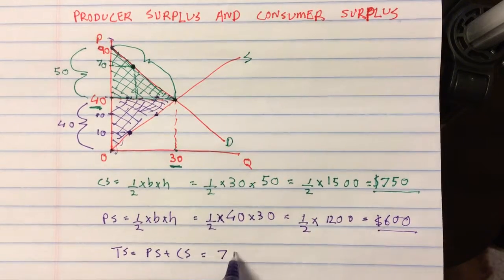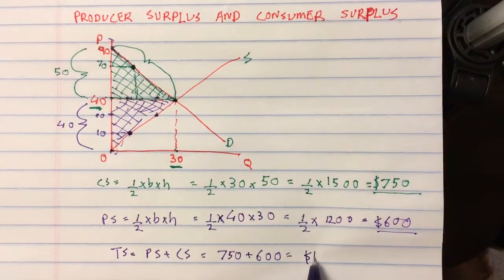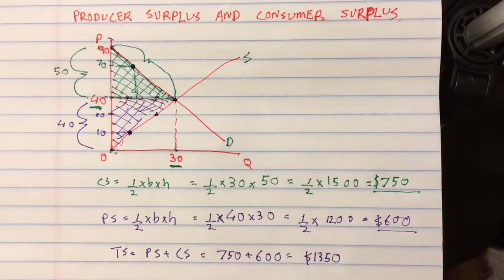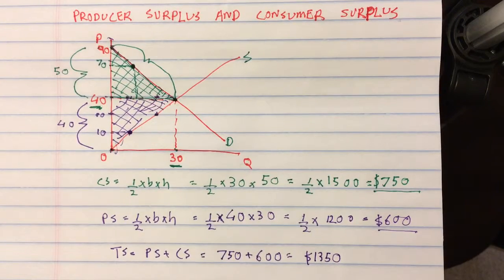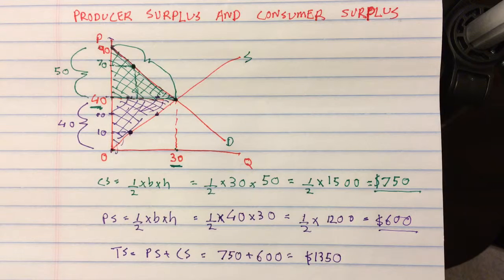So it is equal to $750 plus $600, which comes out to be $1350. So this is how we calculate producer surplus, consumer surplus, and total surplus for a product that's being traded in the market.